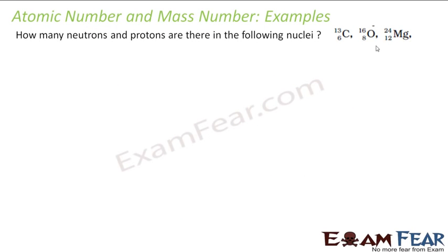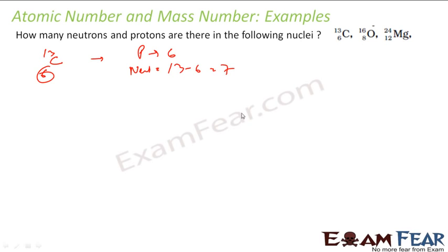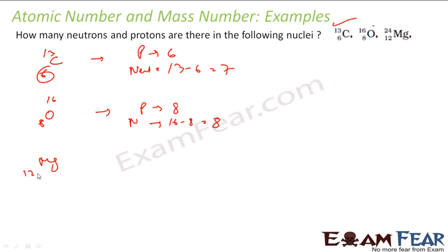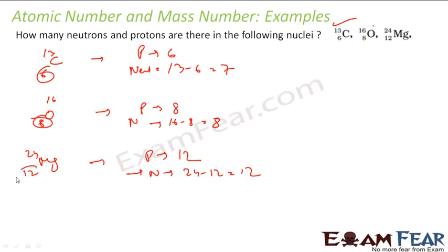Next: how many neutrons and protons are there in these nuclei? For Carbon-13 (⁶C¹³): protons = atomic number = 6, neutrons = 13 − 6 = 7. For Oxygen-16 (⁸O¹⁶): protons = 8, neutrons = 16 − 8 = 8. For Magnesium-24 (¹²Mg²⁴): protons = 12, neutrons = 24 − 12 = 12.